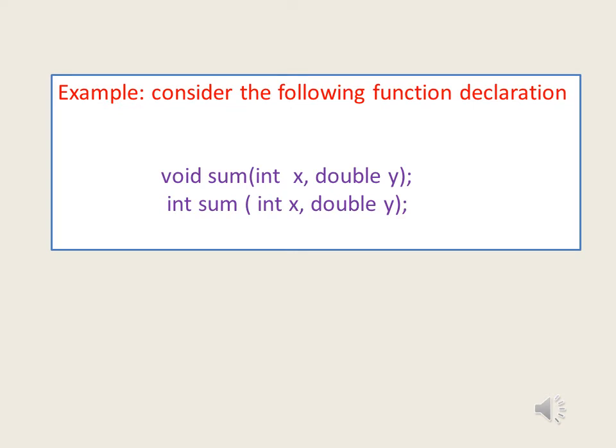In this example, both function declarations have the same name — that is, sum — but the same argument list: int x and double y in both functions. This attempt to overload function sum is incorrect. In this case, the compiler will generate a syntax error. Note that the return types of these function declarations are different, but that alone is not sufficient to overload.